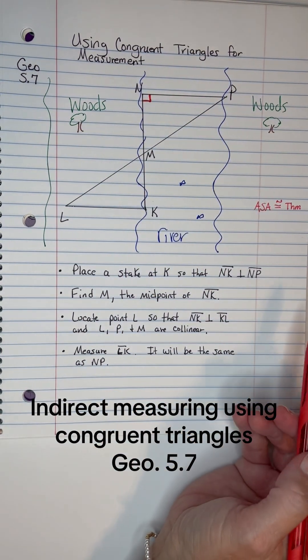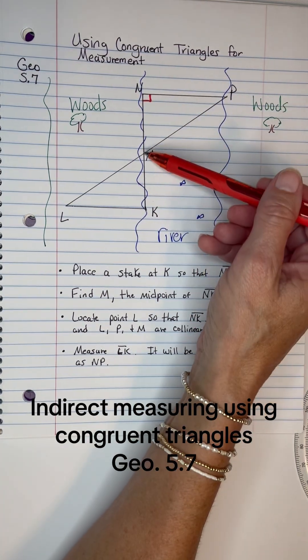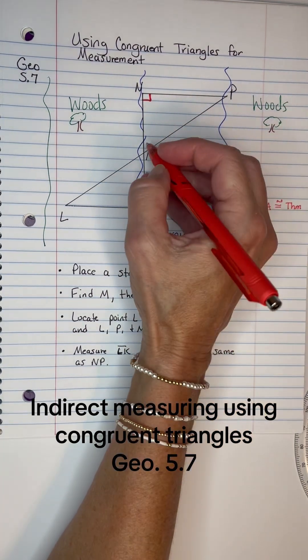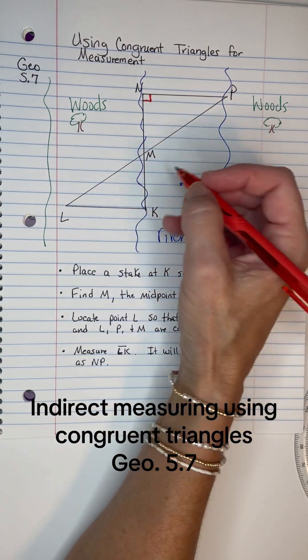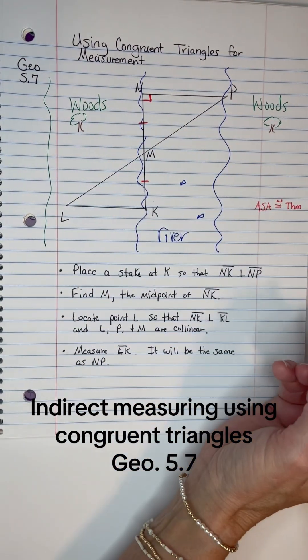Now just use a tape measure to find the middle of NK and put another stake there at M. Since it'll be the middle, it's a midpoint, which means NM and MK will be the same size.